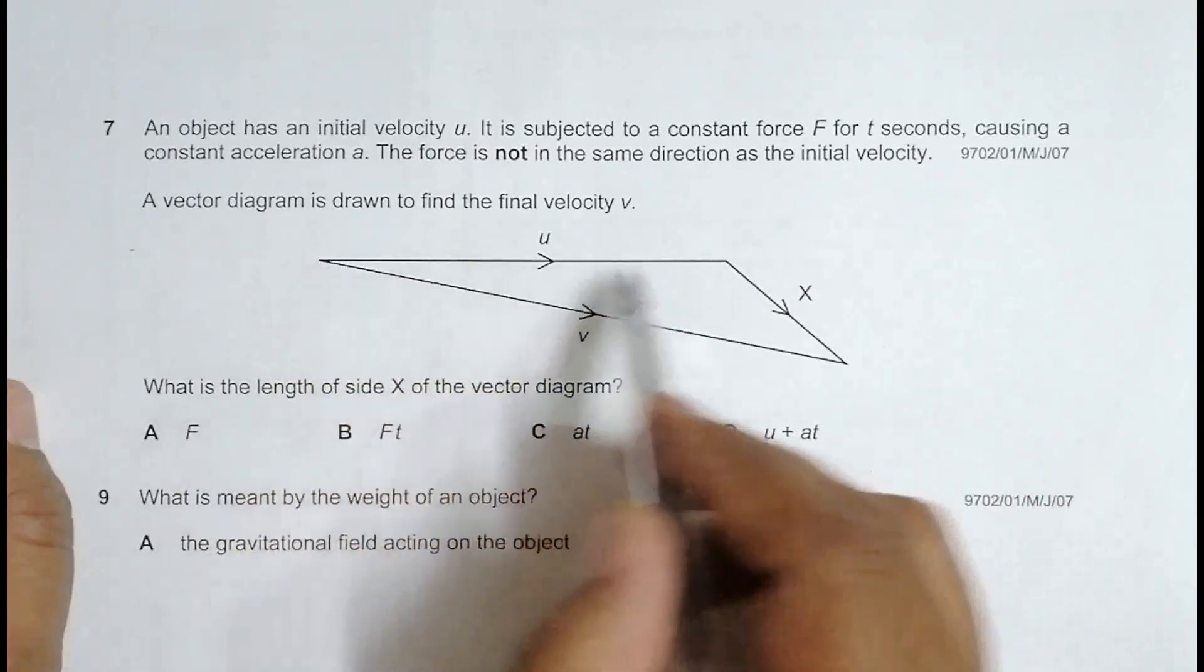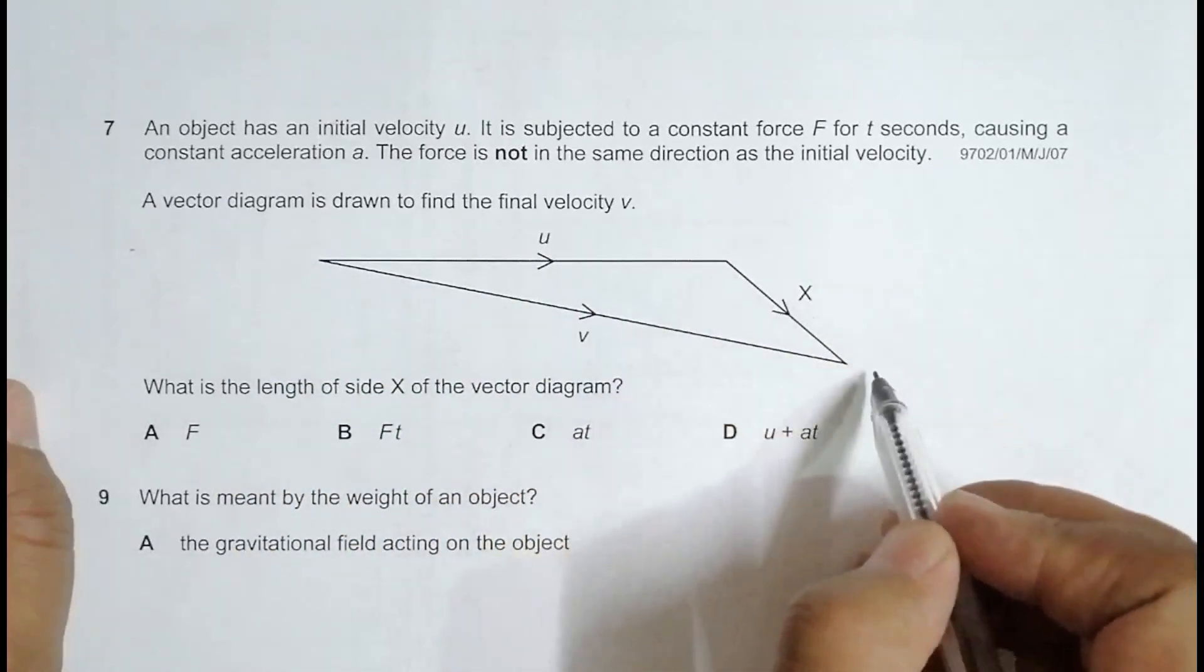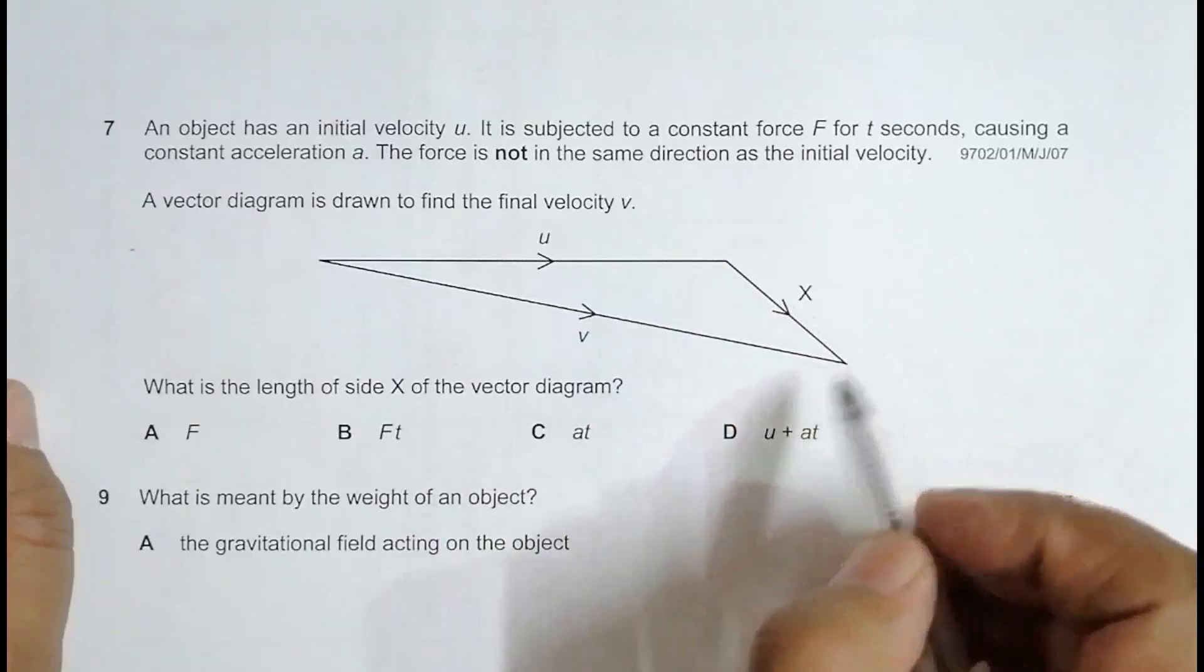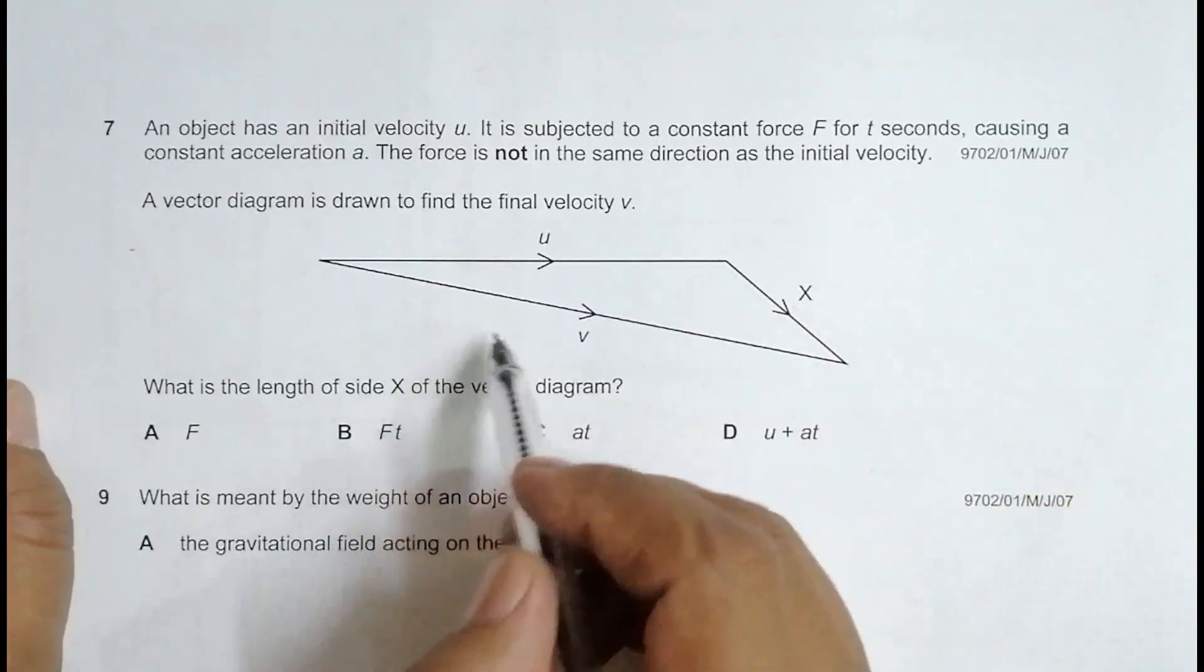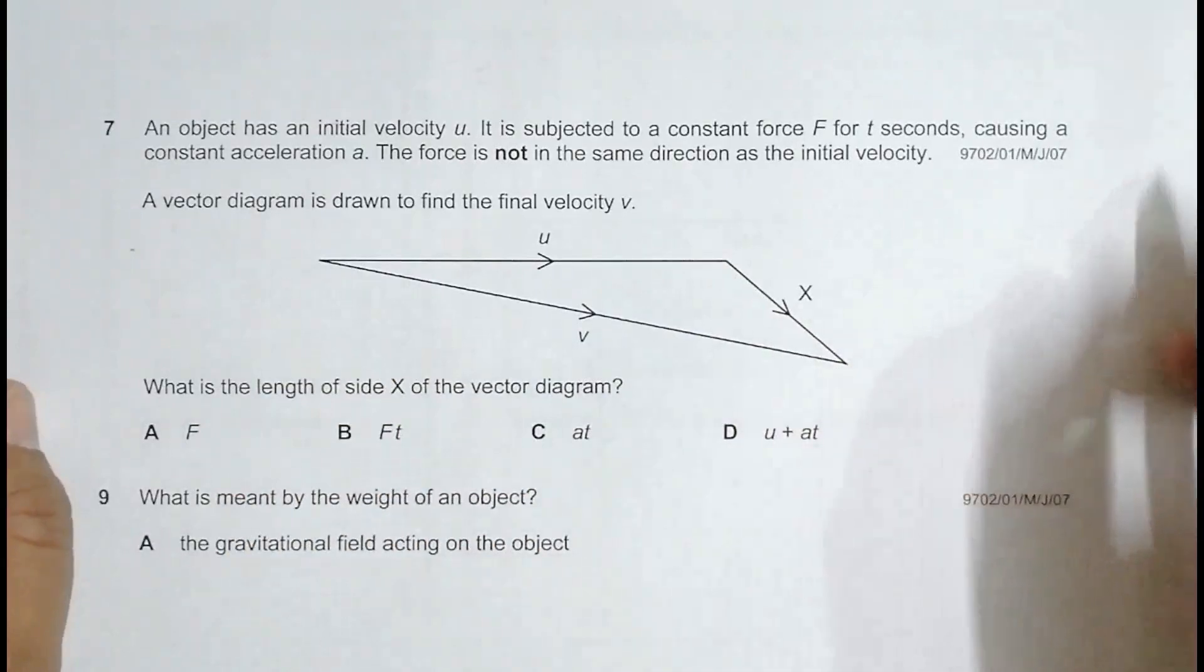Because first U has been drawn, and from the tip of U, then X has been drawn. So, then we have shown V as the vector from the starting point to the finishing point, to the end point.